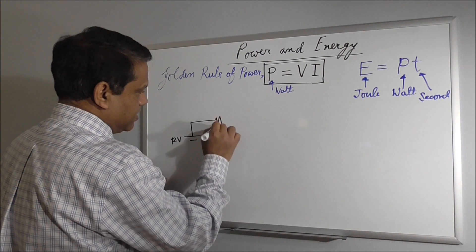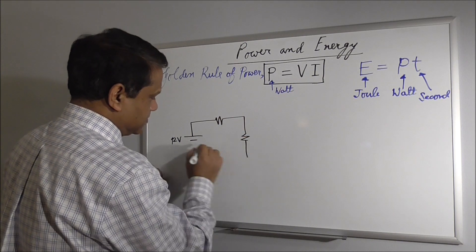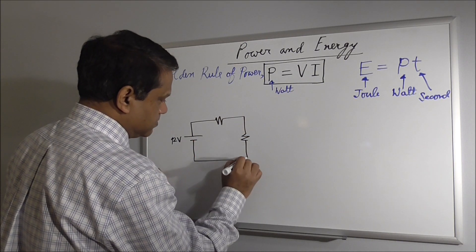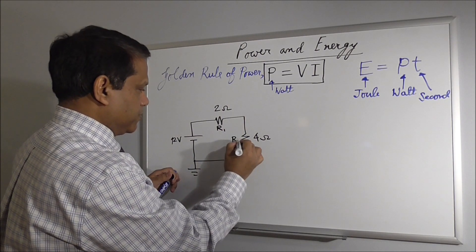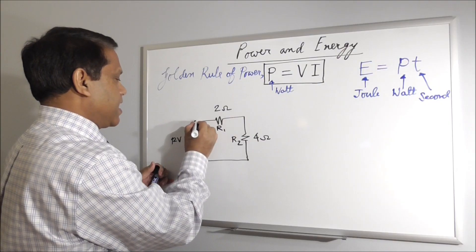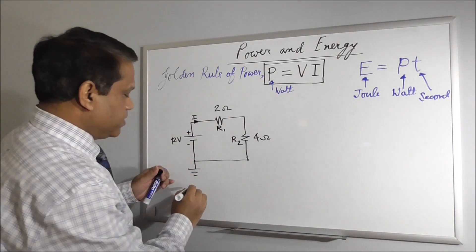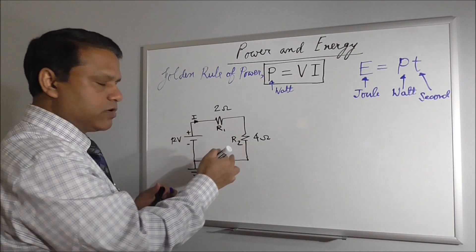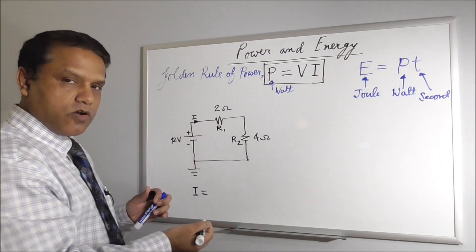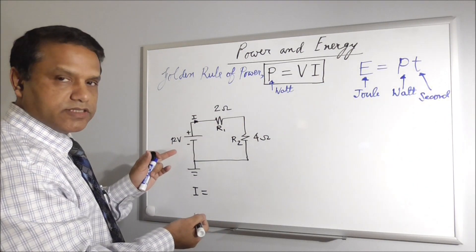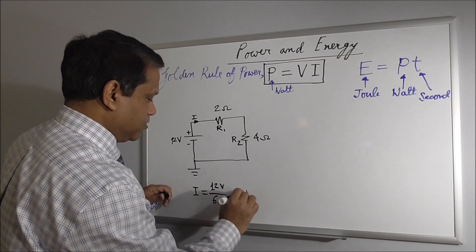Let's take an example. We have a 12 volt battery, we have two resistors, we call this R1, R2. Let's call the current I. And how much will be the current? These two are in series, so total resistance is 6 ohm. The current will be 12 by 6, 2 ampere.